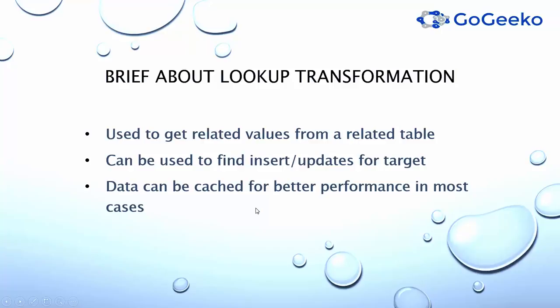In lookup transformation you can cache the data, which means when a source row comes it can directly match on the cached data versus going to the database or to the actual file. In most cases it can give you better performance, but in some cases it can be a bottleneck as well. Lookup transformation can be used on flat files or on database tables.